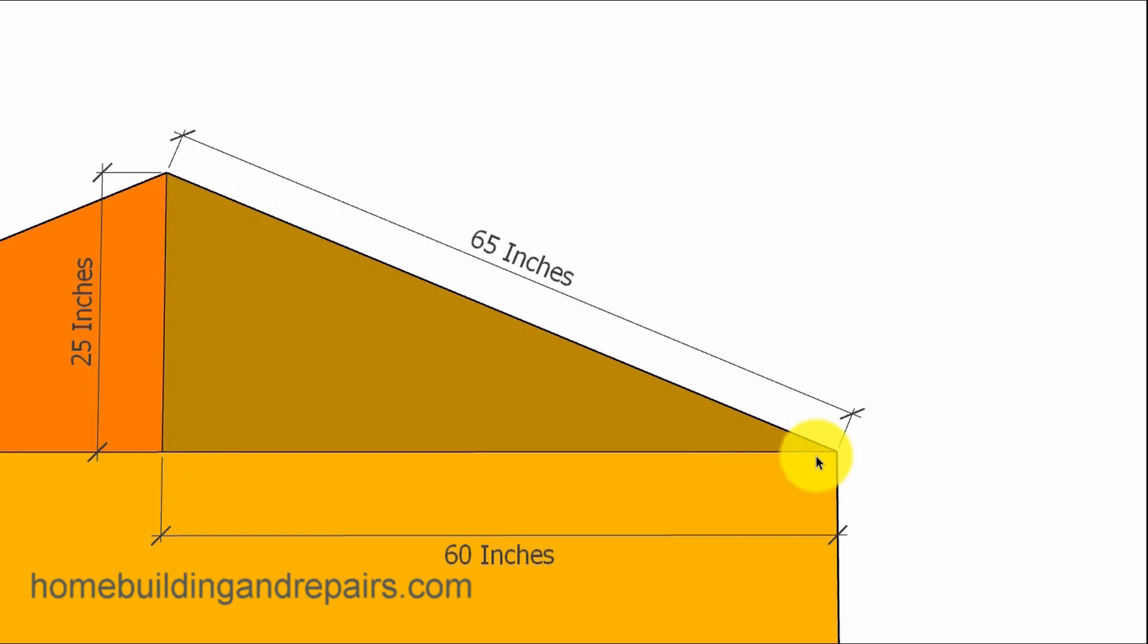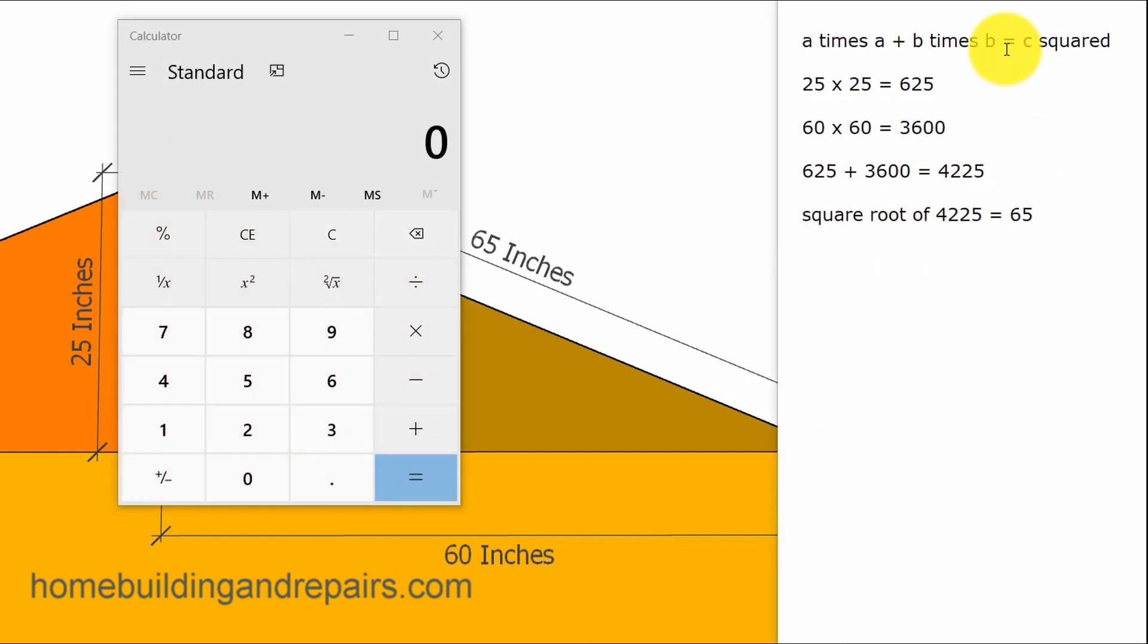But how do we get there? Well, we're going to have to bring in our calculator and a few extra numbers here to give you an idea of what we're doing. So let's go ahead and review the formula again. A times A or A squared plus B times B equals C squared. Here's A times A, 25 times 25 equals 625. So the square of 25 is 625.